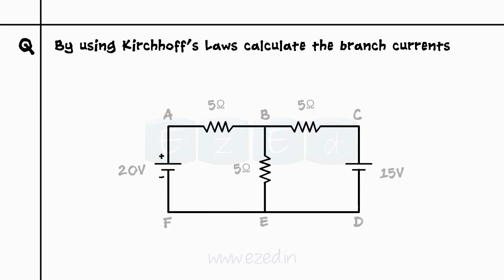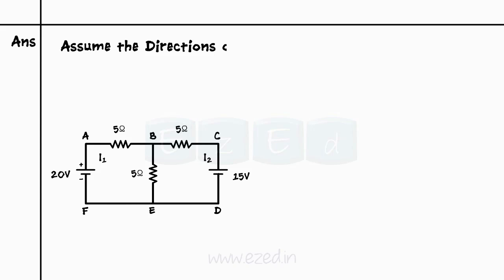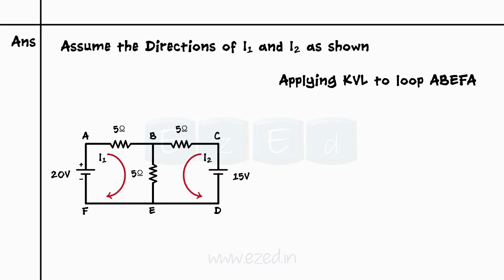Consider an example. By using Kirchhoff's law, calculate the branch currents in the circuits shown. Initially, we can assume the directions of the two currents I1 and I2 as shown. Applying KVL to loop ABEFA, we can write the equation for loop 1 as 20 minus 5 I1 minus 5 into I1 plus I2 equals 0.